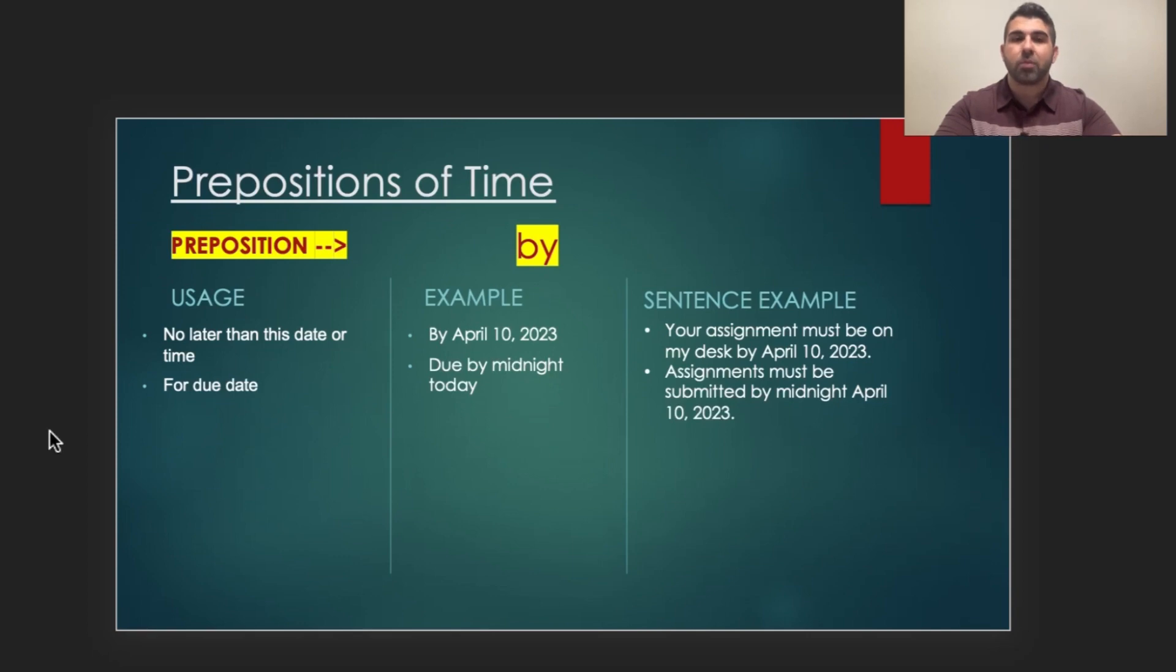Moving on to the preposition, by. So, by, again, like other prepositions we have discussed so far, does have other usages. But we will only talk about its usage in relation to time in this video. So, by, as a preposition of time, indicates no later than this day, date, or time. So, by April 10, 2023. Your assignment must be on my desk by April 10, 2023. So, oftentimes teachers and managers at work will give you due dates. So, we can use by for due date. So, due by midnight tonight, today. So, we can say, assignments must be submitted by midnight today, or midnight, April 10, 2023.